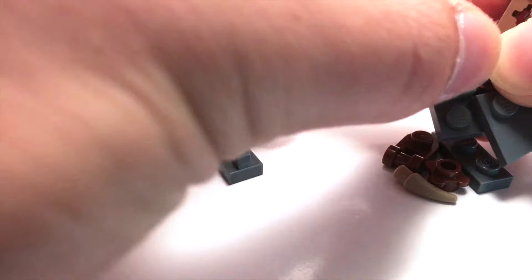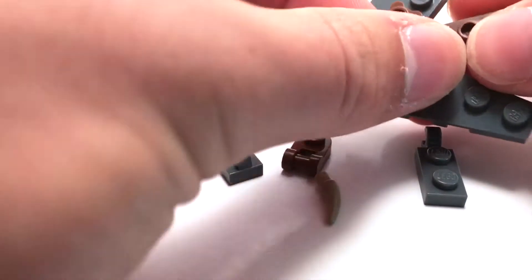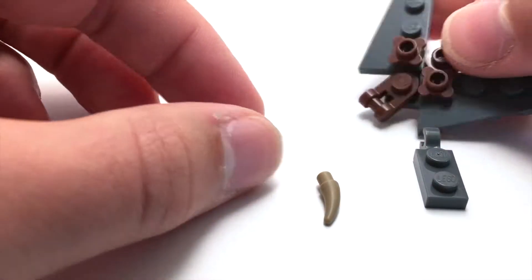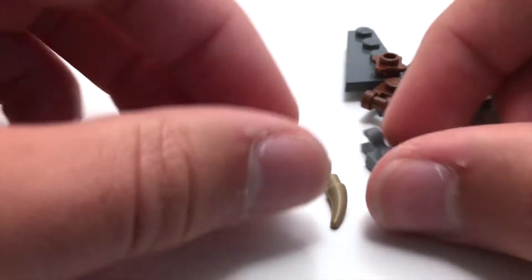Then we have a couple pieces for texture on the wings there. And then the head is also attached using a piece that's rounded on the end, similar to the tail.